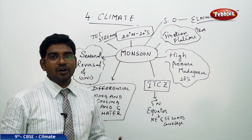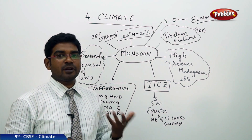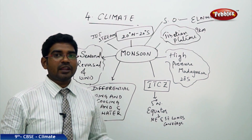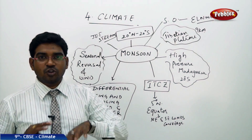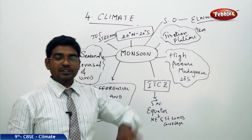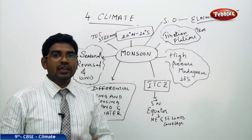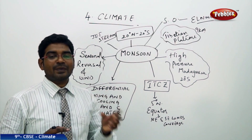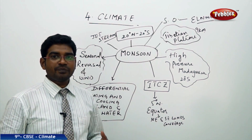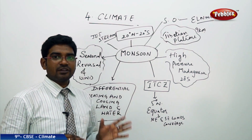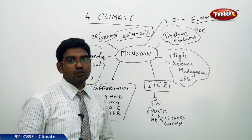Warm currents do not carry much moisture or rain-bearing effects with them, whereas cold currents carry water vapor and moisture, resulting in rainfall. During El Niño, cold currents are forced to convert into warm ocean currents because of the movement of warm currents from the Pacific Ocean towards the Southern Ocean, causing poor rainfall. El Niño is a Spanish word meaning 'new child' or 'new changes happening', reflecting the unusual change from the regular phenomenon.